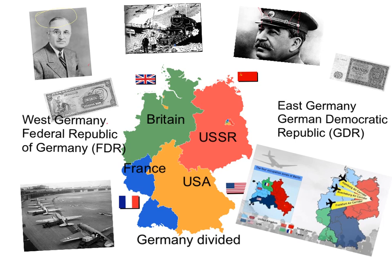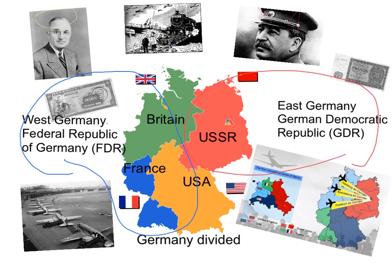In September 1949, West Germany was officially created as a separate state called the Federal Republic of Germany. One month later, the USSR created a second independent state, East Germany, also known as the German Democratic Republic, or GDR. Soviet troops remained in the GDR, and the new country became another Soviet satellite state.